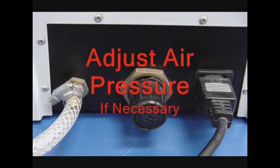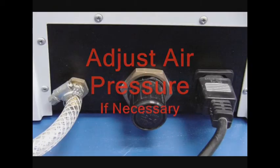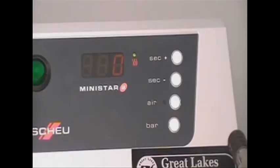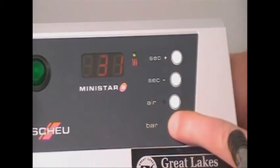The air pressure dial of the MiniStar is located on the back of the machine. Before adjusting the pressure through this dial, press the bar button to display the machine's pressure setting. Standard operating pressure should be set at 3 to 3.2 bar. Keep pressing the bar button when adjusting pressure.